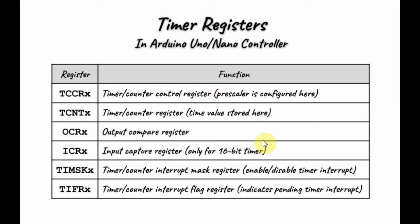A table of the programmable timer registers within the microcontroller is shown here. The timer counter control register stores the prescaler value. Prescaler is a parameter that lowers the frequency of the input system clock, and the microcontroller supports prescaler values of 1, 8, 64, 256, and 1024. We also have the timer counter register, output compare register, input capture register (only in Timer 1), timer counter interrupt mask register used to enable or disable timer interrupts, and the timer counter interrupt flag register.